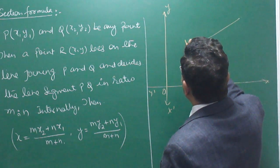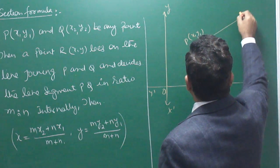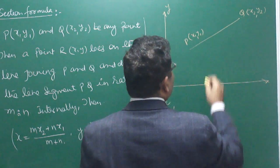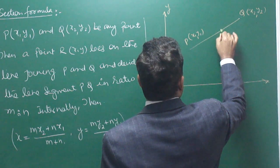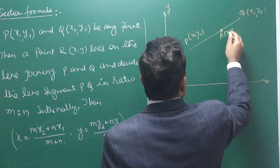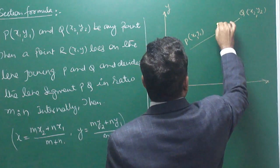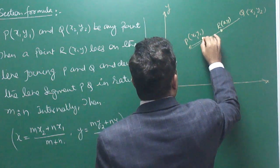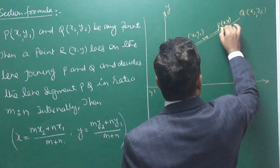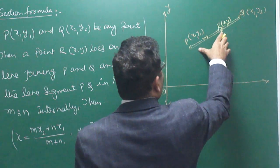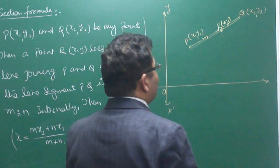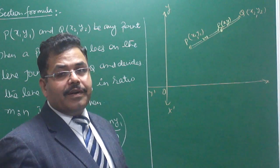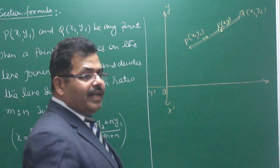We have two points: one is P with coordinate (x1, y1) and another point is Q with coordinate (x2, y2). A third point R lies somewhere on the line segment, with coordinate (x, y). R divides the line segment joining P and Q in ratio M:N. We have to calculate the coordinate of R — that is, the values of x and y.